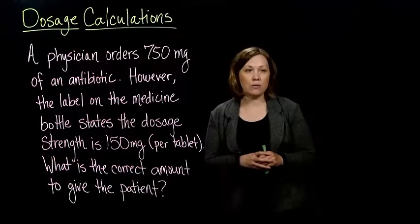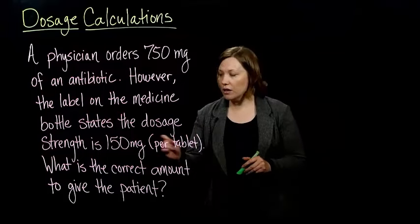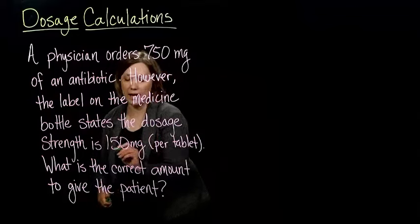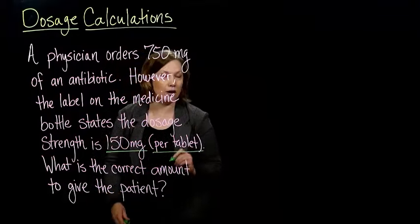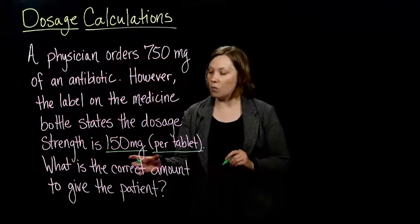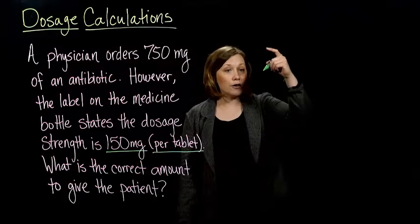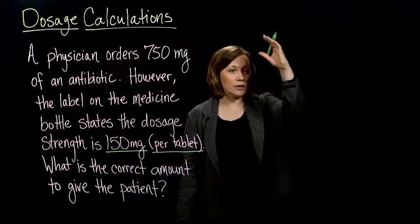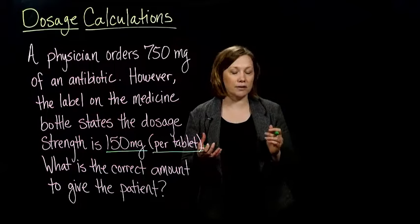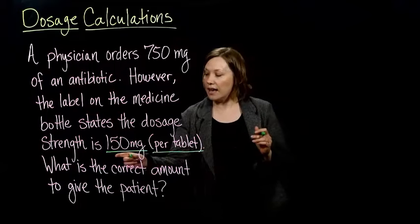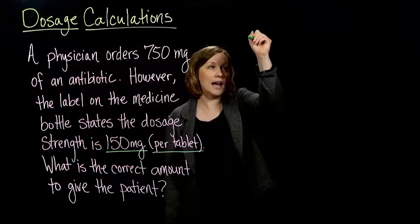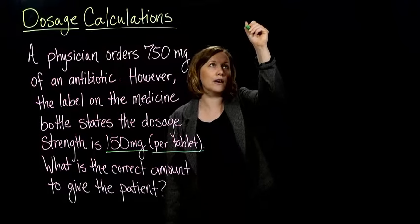So the first thing we're going to start out with, we're going to look at the dose that we have. Your textbook calls this the on-hand dose, but this is what's in each tablet. So we're going to set up a conversion factor using this. And remember, these conversion factors are always equivalent to one. And it's this idea that in one tablet, we've got 150 milligrams.